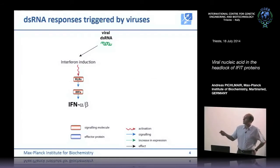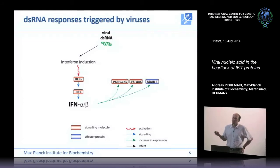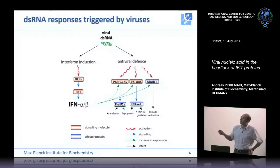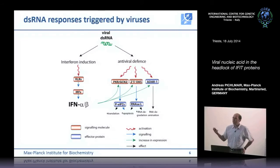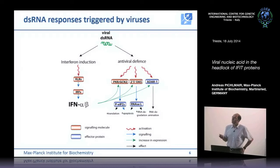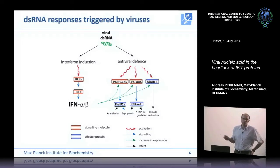Type 1 interferon gives rise to antiviral proteins that are normally inactive in cells. The activity of these antiviral proteins also requires engagement of similar viral nucleic acid, and only when they engage this nucleic acid do they expose their detrimental activities — detrimental not only for the virus but also for the cells themselves. In some way this seems to be a safety mechanism to only activate these proteins in the presence of a virus.